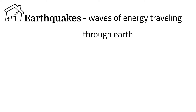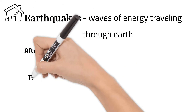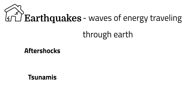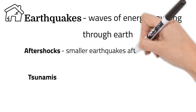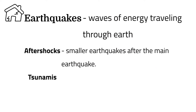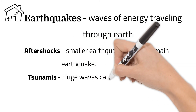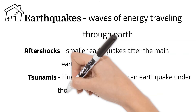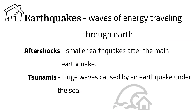Earthquakes often cause aftershocks and can lead to tsunamis. Aftershocks are smaller earthquakes that happen after the main big earthquake, and sometimes there can be as many as 1,000 aftershocks a day. Tsunamis are created when an earthquake happens under the sea and creates huge waves that can travel across oceans and cause lots of damage when they hit shore.